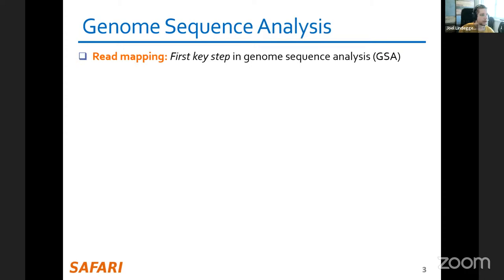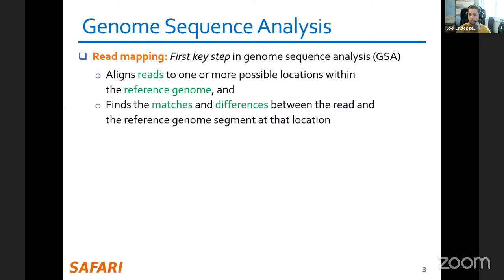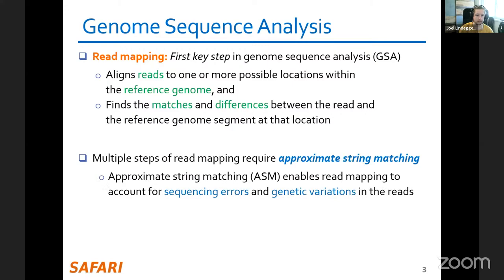We analyze reads using read mapping, where we align them to possible locations in a reference genome. The goal is to find where a read matches in a known reference genome and how it differs from it. Multiple steps in this pipeline require approximate string matching, whose results are needed in downstream analysis steps to make useful decisions based on the reads.